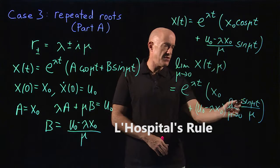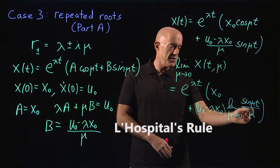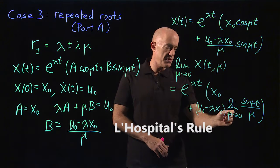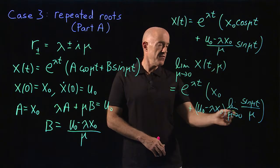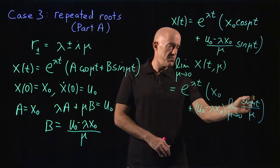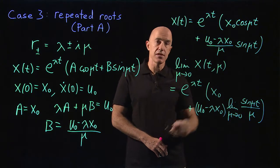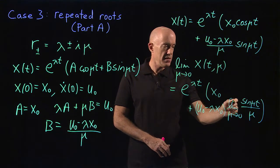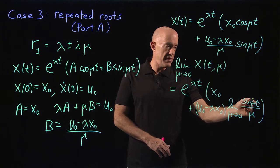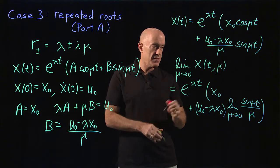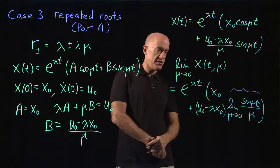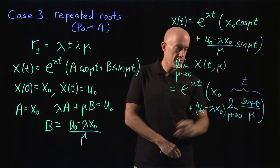L'Hôpital's rule says we differentiate the numerator and denominator with respect to the limiting variable, here mu. Differentiating the denominator gives 1. Differentiating the numerator using the chain rule gives t times cosine mu t, which goes to t as mu goes to 0. So this limit equals t.